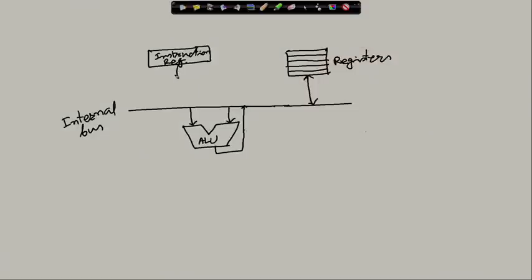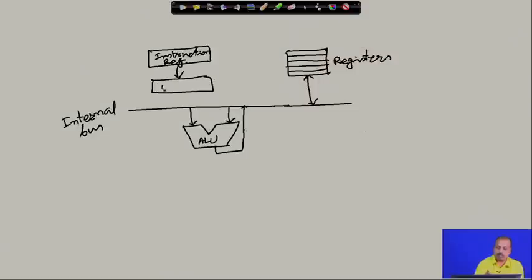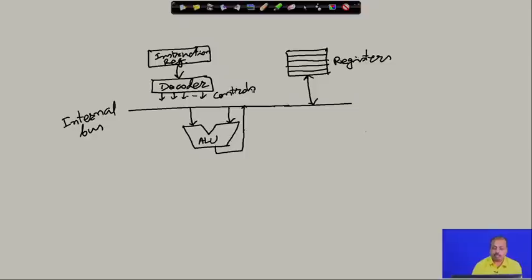The instruction register content goes to another module commonly known as the decoder. This decoder generates the control signals that will be required for doing the operation. We will slowly understand what these control signals are.